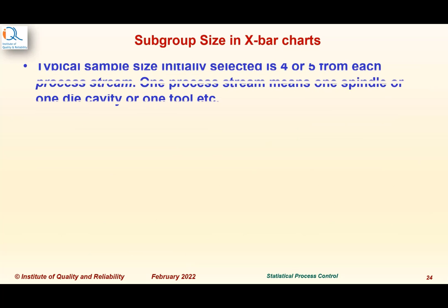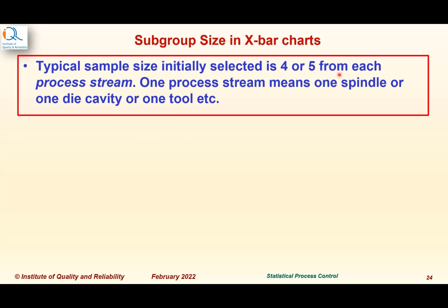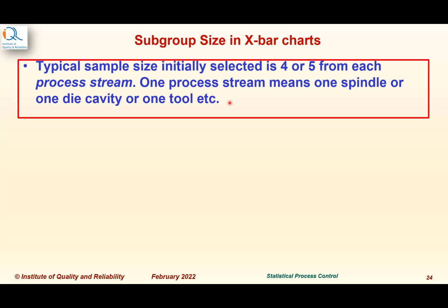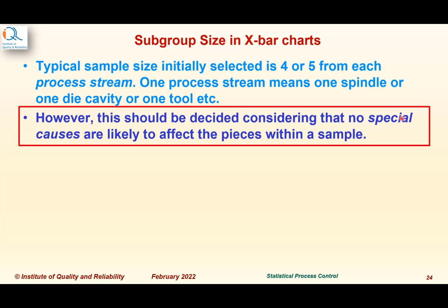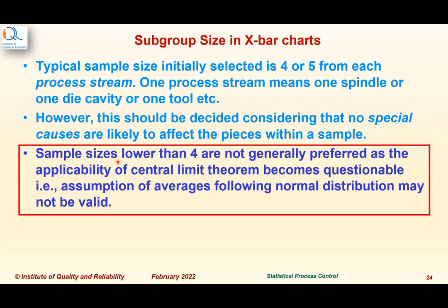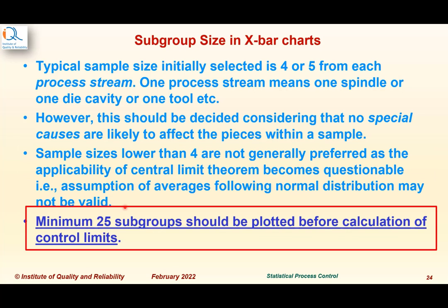What should be the subgroup size in X-R charts? A typical sample size initially selected is 4 or 5 from each process stream — one spindle, one die cavity, or one tool, for example. This is only a guideline; for a specific process, the sample size may be larger. Subgroup sizes lower than 4 are not generally preferred, as the applicability of the central limit theorem becomes questionable — that is, the assumption of averages following normal distribution may not be strictly valid. A minimum of 25 subgroups should be plotted before calculating control limits.